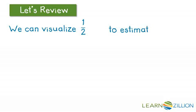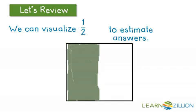We can visualize one half to estimate answers. We're going to use this model of one half. Before we actually solve an addition of fractions problem or word problem, we're going to think: should our answer be more than one half or less than one half? We're going to look at what our problem tells us and the sizes of the fractions it gives us, and estimate whether the answer should be larger or smaller.